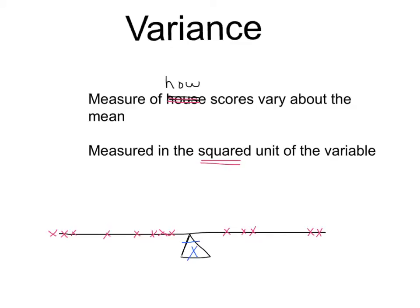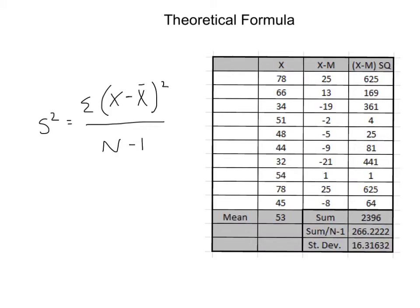So, what we'll do is we're going to look at an example of how we can calculate variance. For the example, I started with the theoretical formula. I have, as you can see here, 10 x values. I made up fake data looking at how many basketball free throws somebody scored out of 100. So, I had a person score 78, 66, 34, 51, 48, and so on. And I only did a sample size of 10 because much longer and it would be hard for me to do all the formulas on my iPad.